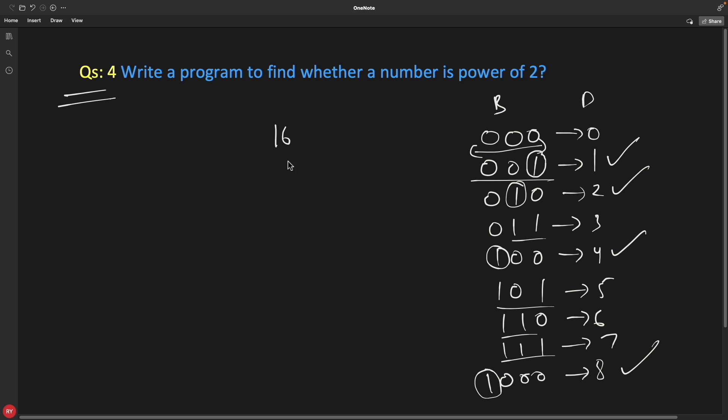The idea is: if your number is 16, the binary representation is one followed by four zeros. We want to find if this set bit is one. Let's not do that. Instead, subtract 1 from this number. So that gives 15, and that looks like 0111.